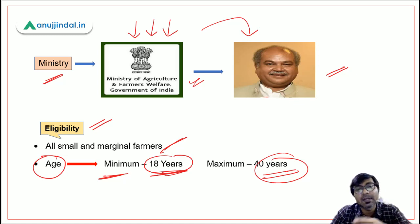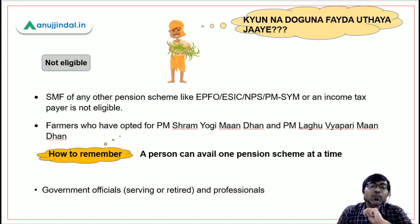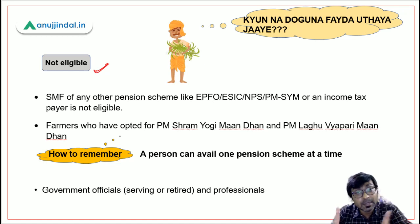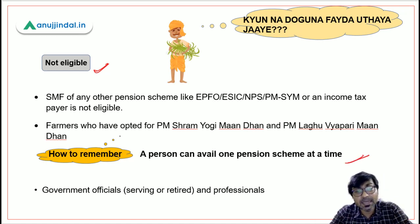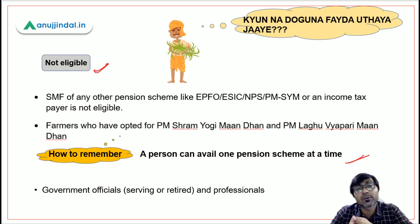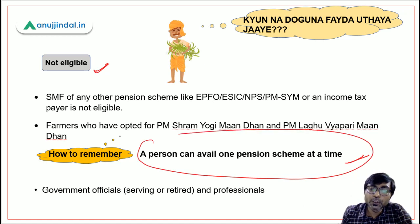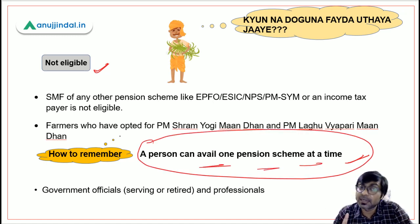Now let's talk about ineligible persons — farmers who are ineligible to register in this scheme. You should remember this key line: a person can avail only one pension scheme at a time. So if a person is already enrolled in PM Laghu Vyapari Mandhan or PM Shram Yogi Mandhan, he cannot also enroll in this scheme. Once you remember this rule, you can easily identify who is ineligible.